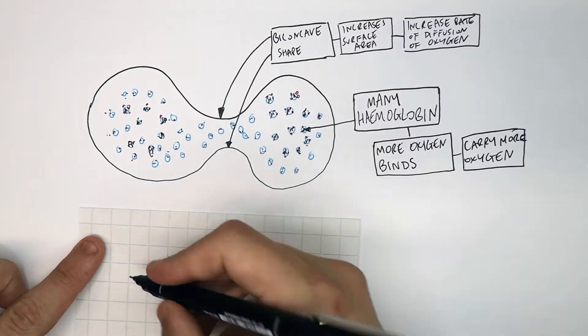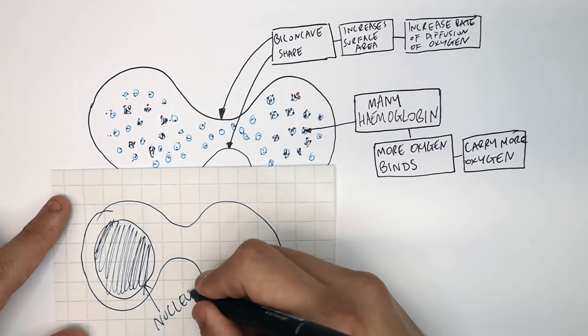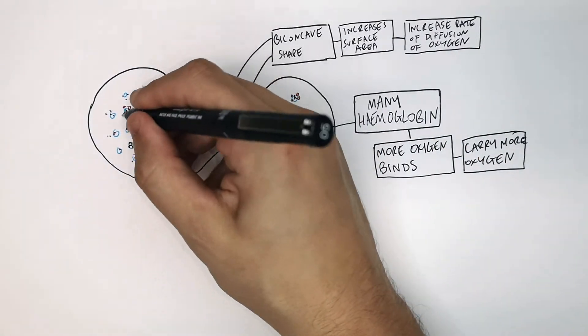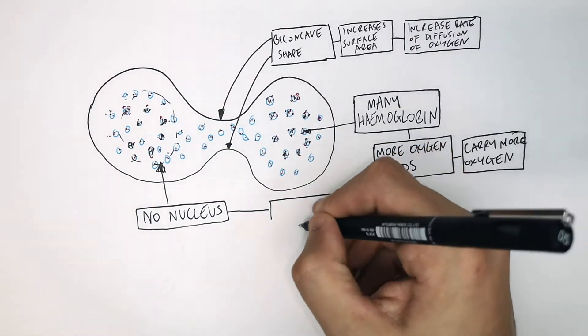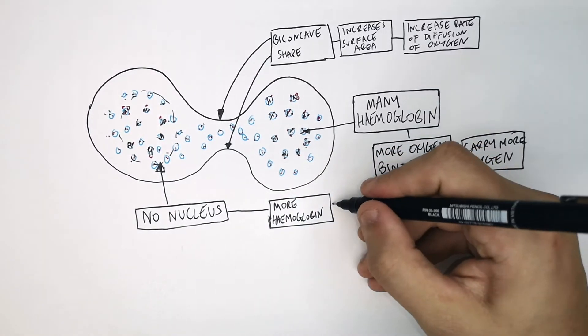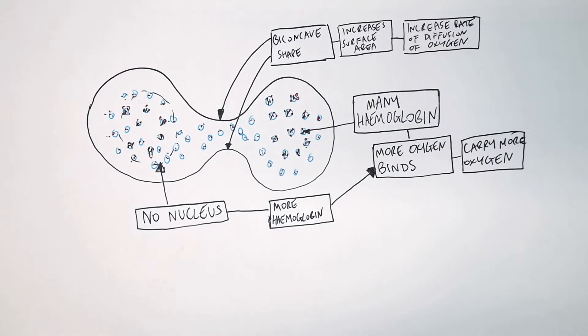The last adaptation is an erythrocyte has no nucleus. If it had a nucleus, it would carry less haemoglobin. So it does not have a nucleus. So there is no nucleus in an erythrocyte. Therefore, it can carry more haemoglobin, and therefore more oxygen binds, and oxygen is carried in a higher concentration.